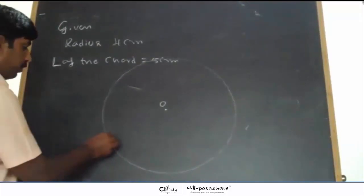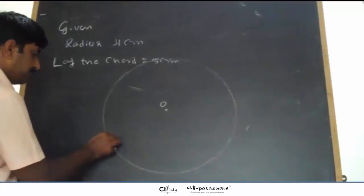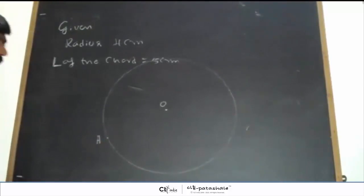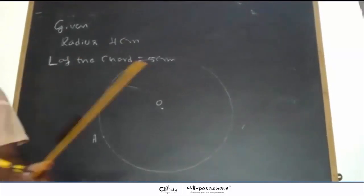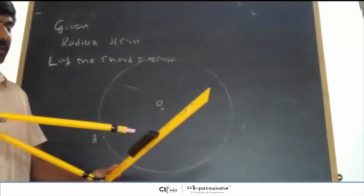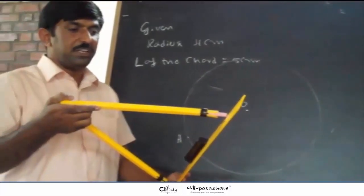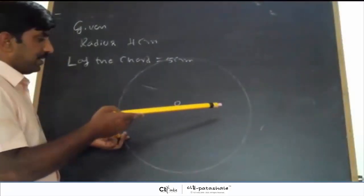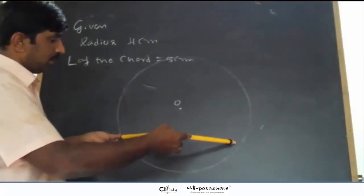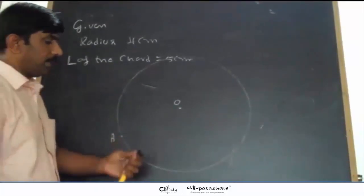Next, mark a point A on the circumference. Take a 5 cm radius with A at the center and cut the circle at point B.